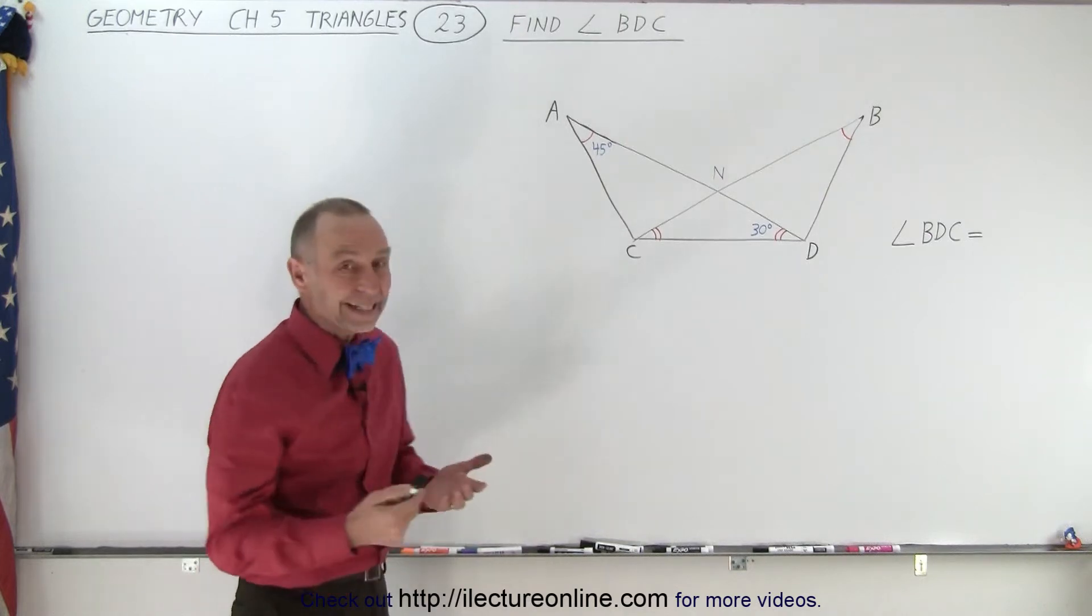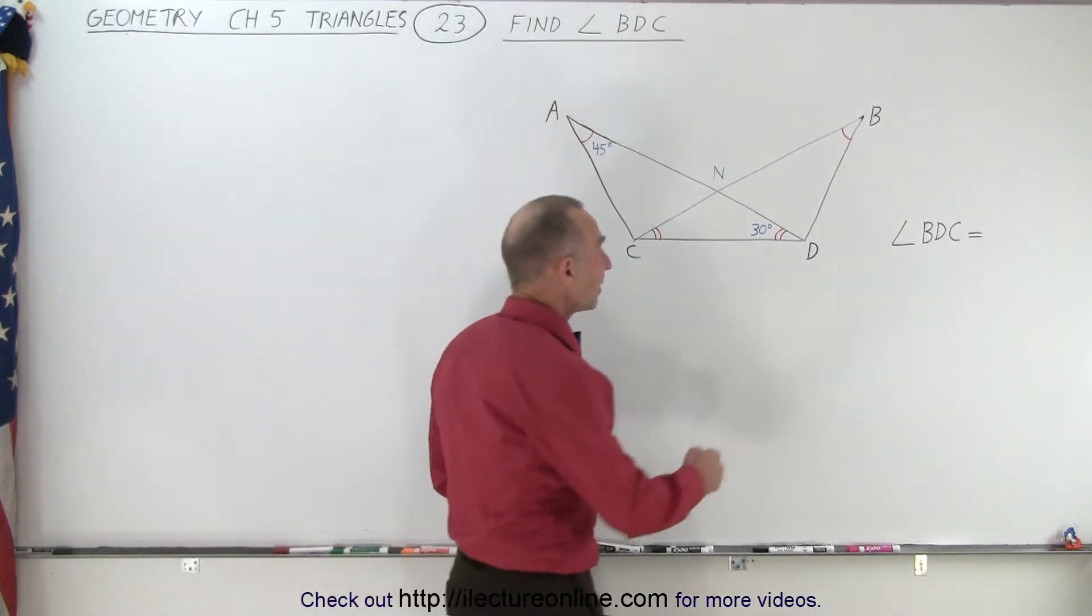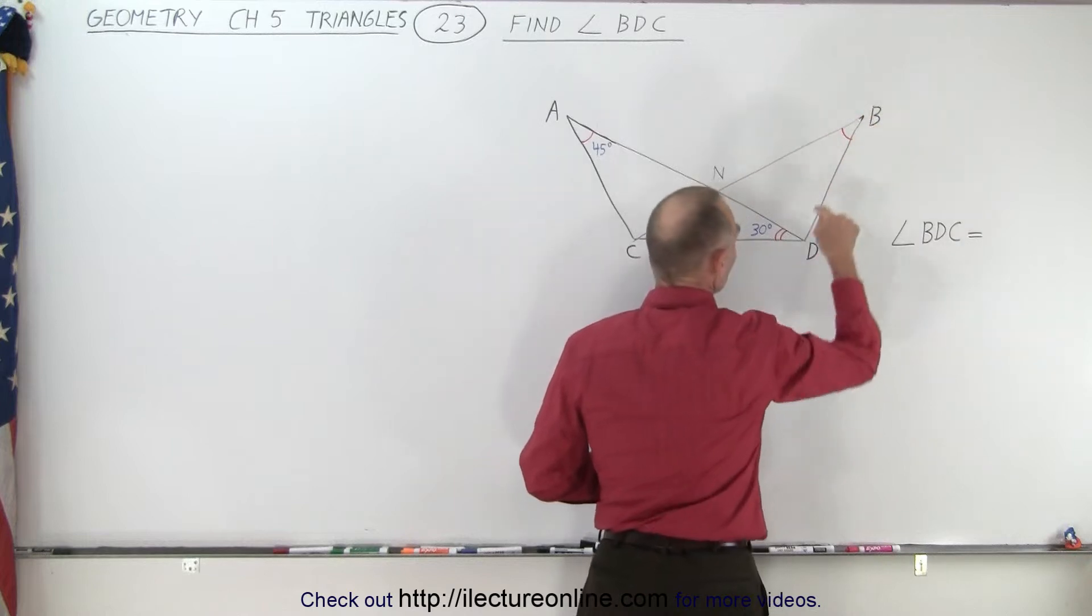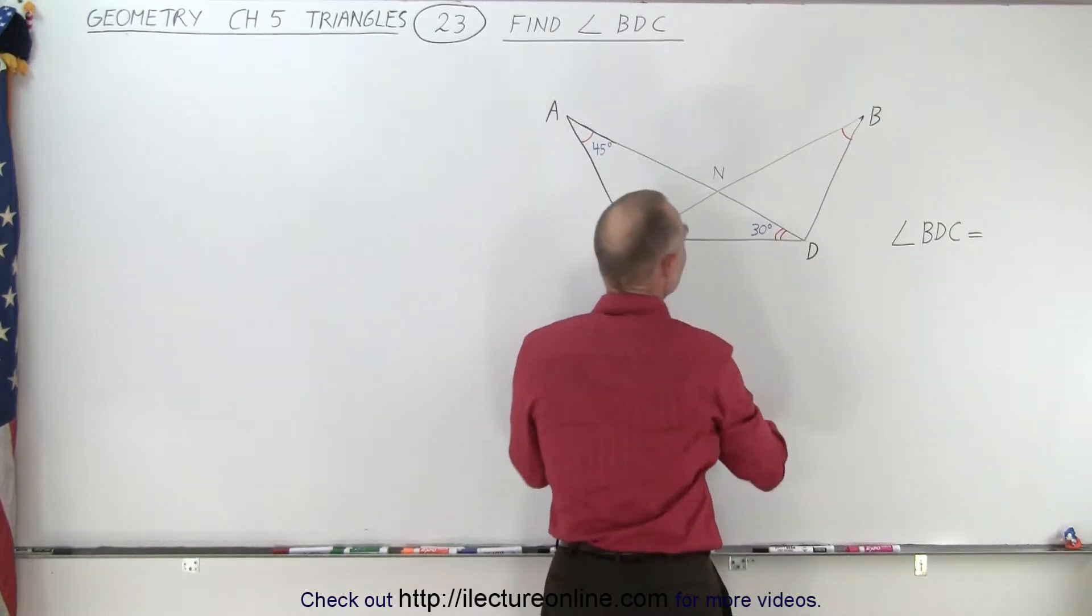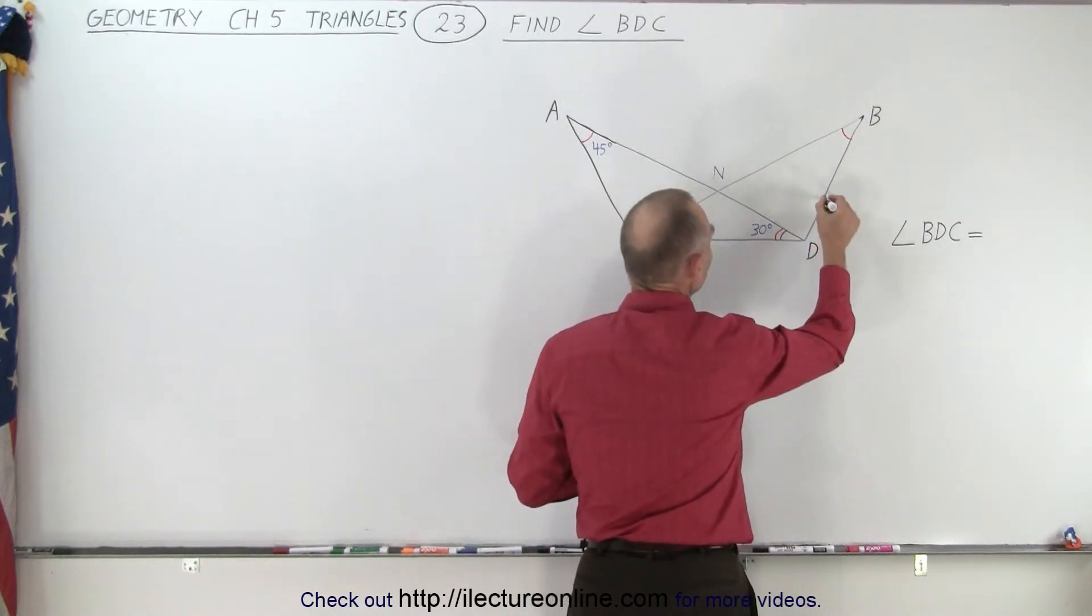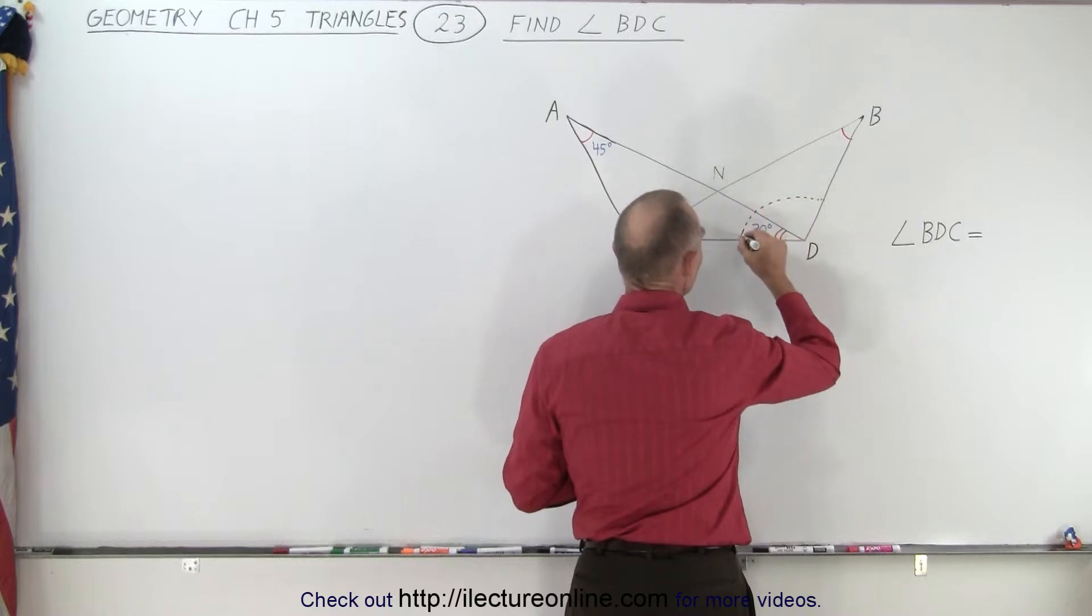Here they're asking us to find the angle BDC. So if you take corner B, corner D, and corner C we're looking for this angle right here. That's the angle of measure we're looking for.